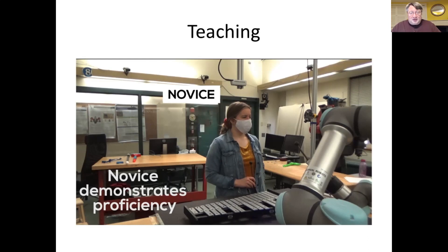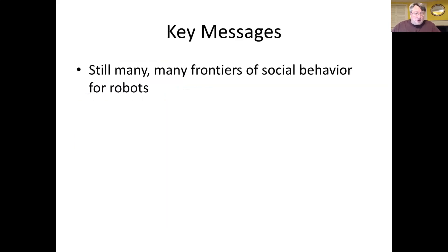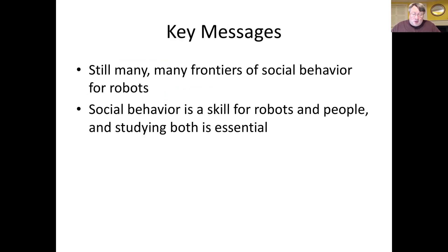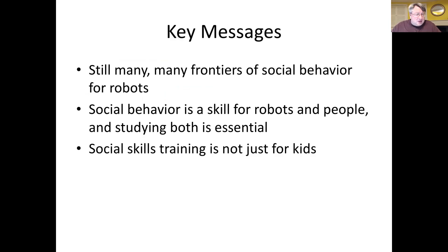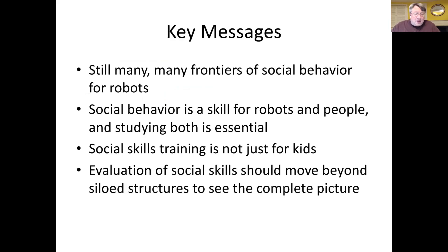So the messages I wanted to leave you with today: there are still many frontiers of social behavior that we're going to be working on. Social behavior is a skill for both robots and people, and studying both is essential. Social skills training is not just for kids and not just for kids with ASD. And finally, the evaluation of social skills should move beyond these siloed structures to a more complete understanding. Thanks very much.